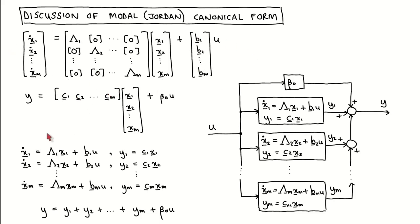We can now multiply out the state equation, which gives us a set of lower dimensional state equations corresponding to a set of lower dimensional state variable subsystems. We can define the output of the first subsystem as C times X1 and similarly for the other subsystems.